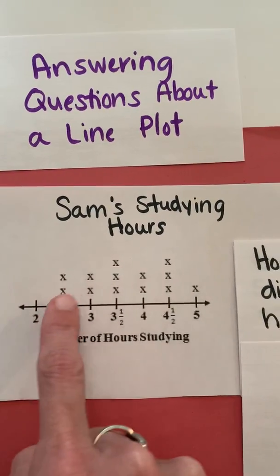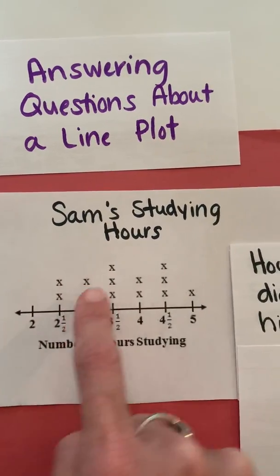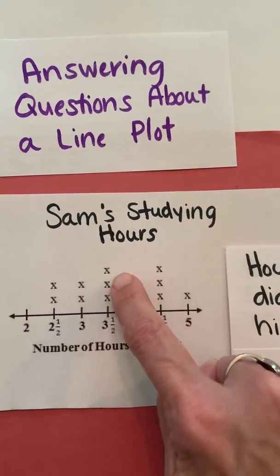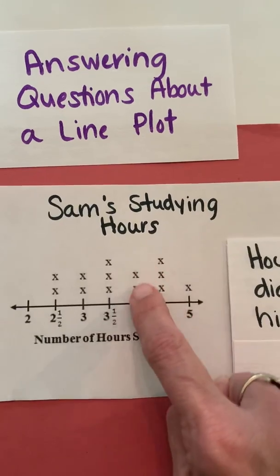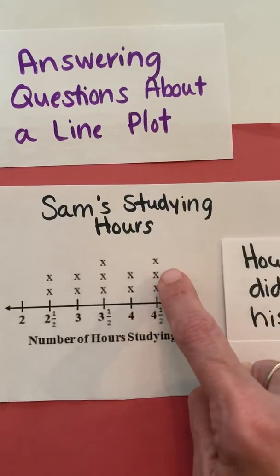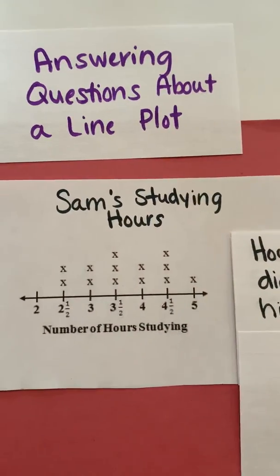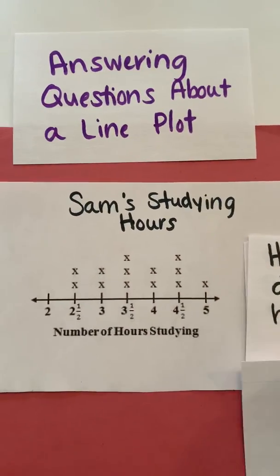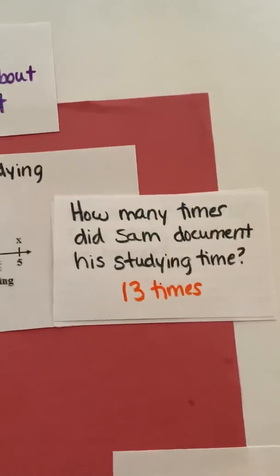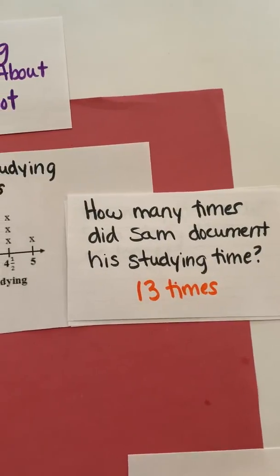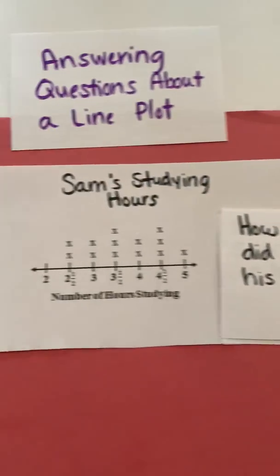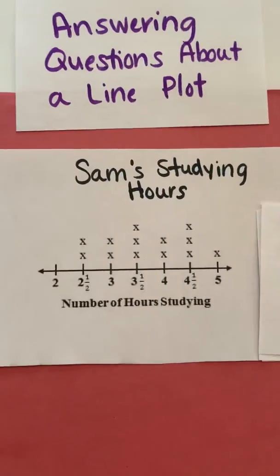One way to do that is to count every X: 1, 2, 3, 4, 5, 6, 7, 8, 9, 10, 11, 12, 13. So he studied 13 different times — he documented it 13 times.